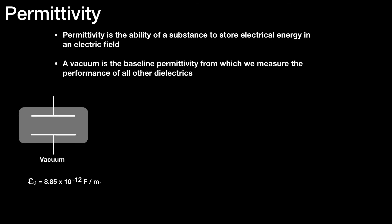The permittivity, and that sign is epsilon, so epsilon 0 is equal to 8.85 times 10 to the minus 12 farads per metre. That is the permittivity of free space. In other words, that's the ability of free space, or a vacuum, to store electrical energy in an electric field.